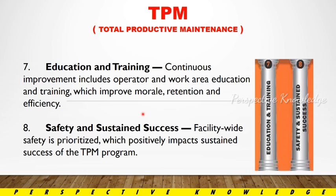Next, safety and sustained success — facility-wide safety is prioritized, which positively impacts the sustained success of the TPM program. Maintain any problem, take correct action, and implement. If a problem is overcome through training, that is safety. We follow TPM to maintain problems and defects to overcome production. So this is TPM — the 8 pillars of Total Productive Maintenance.